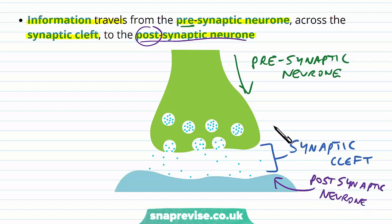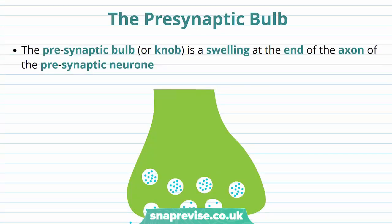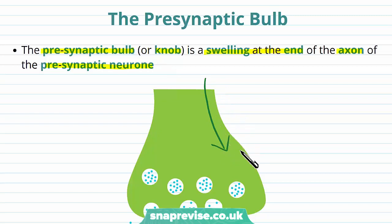Whenever you write about a synapse in an exam, it's really important to be specific in using these terms so that the direction of the information traveling is clearly represented. The first element of the synapse is called the pre-synaptic bulb or pre-synaptic knob. It's basically a swelling at the end of the axon — the axon of the pre-synaptic neuron — where action potentials travel down and arrive at this swelling.